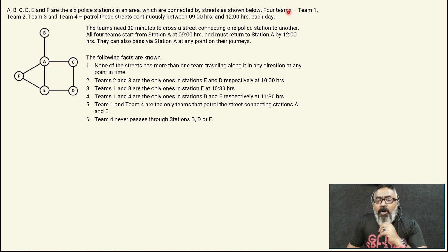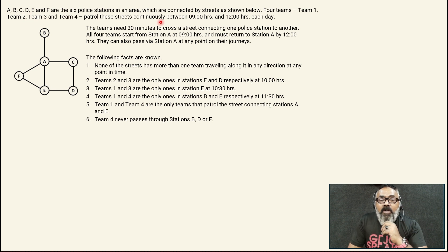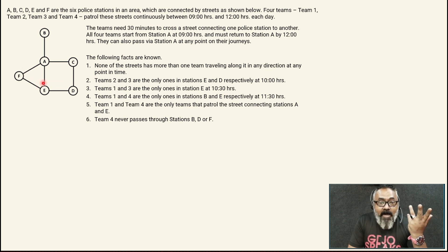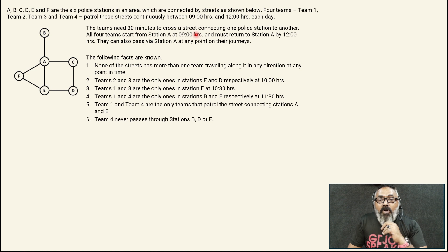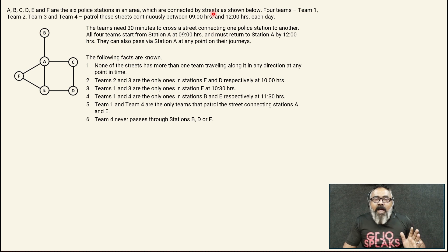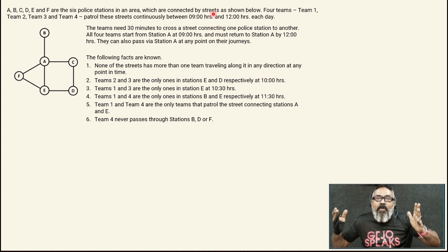Four teams — Team 1, Team 2, Team 3, Team 4 — patrol these streets continuously between 9 hours and 12 hours each day. They are travelling around these connected roads. Each team needs 30 minutes to cross a street connecting one police station to another. So from 9 to 9:30, 9:30 to 10, 10 to 10:30, and so on — there are 6 travel slots they would be doing.